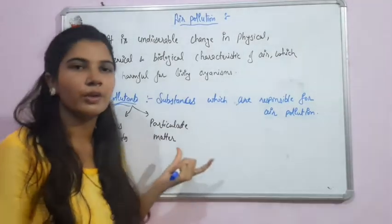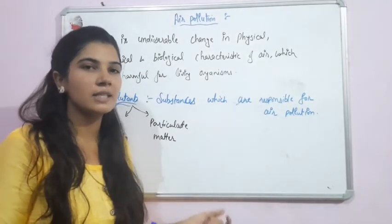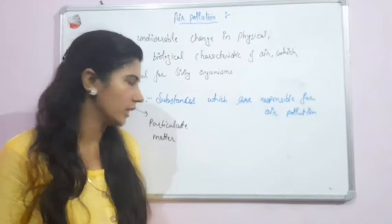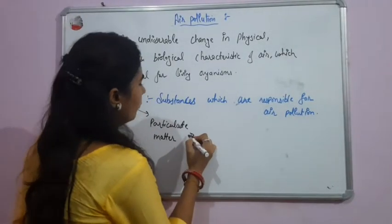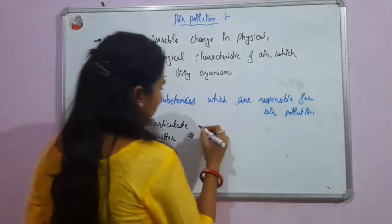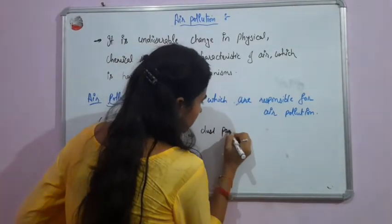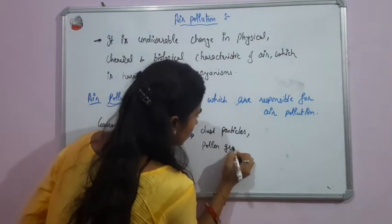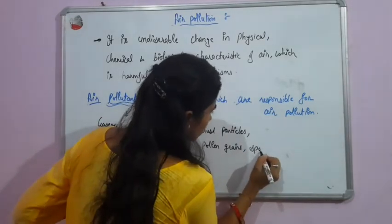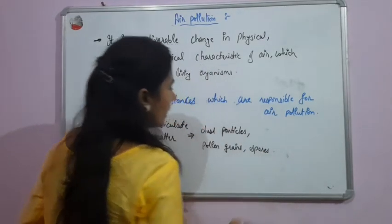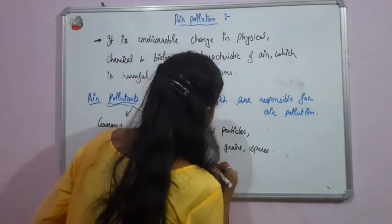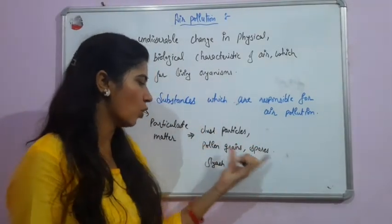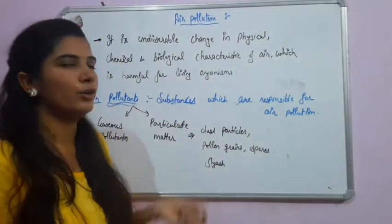Particulate matter is also known as suspended particulate matter. Examples of particulate matter responsible for air pollution include dust particles, pollen grains, spores, and fibres — these are particulate matter which are responsible for air pollution.